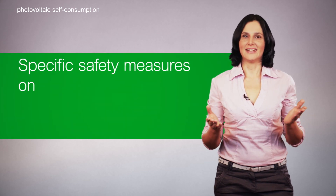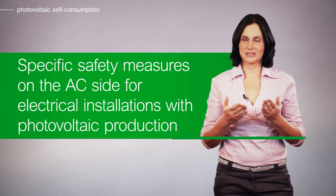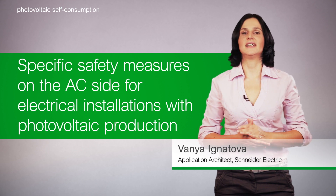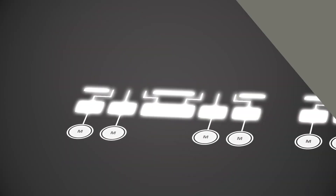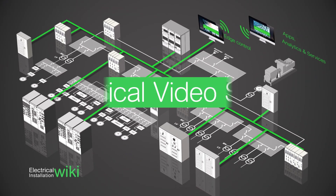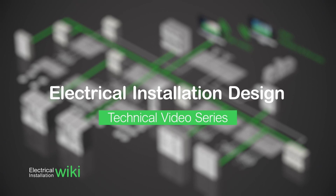Hello and welcome to this video about specific safety measures on the AC side for electrical installations with photovoltaic production. In buildings where photovoltaic production is used for self-consumption, the photovoltaic system is an integral part of the electrical installation. In this video I will explain some of the main specific safety measures required on the AC side for such installations.